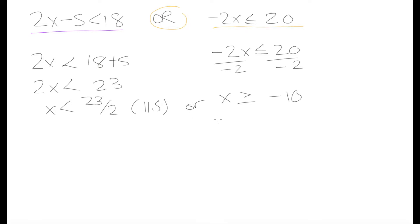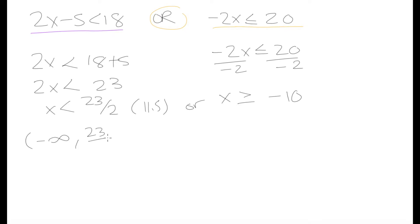So now we have these two conditions. We have either x is less than 11.5 or x is greater than or equal to negative 10. Let's write down each of these two cases in interval notation. When we're talking about x is less than 23 over 2, our lower bound is going to be negative infinity and our upper bound is 23 over 2, not including either of these two numbers so we use regular parentheses.